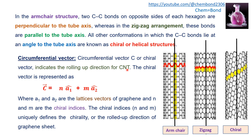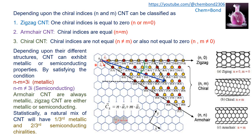The circumferential vector C, also called the chiral vector, indicates the rolling-up direction of the carbon nanotube and is represented by n·a1 + m·a2, where a1 and a2 are the lattice vectors of graphene and n and m are the chiral indices. These indices uniquely define the chirality or rolling-up direction of the graphene sheet. Cutting graphene in one direction and rolling it produces zigzag carbon nanotubes.